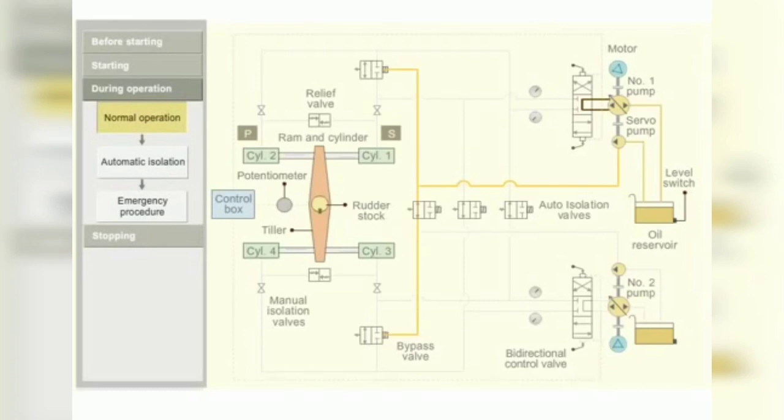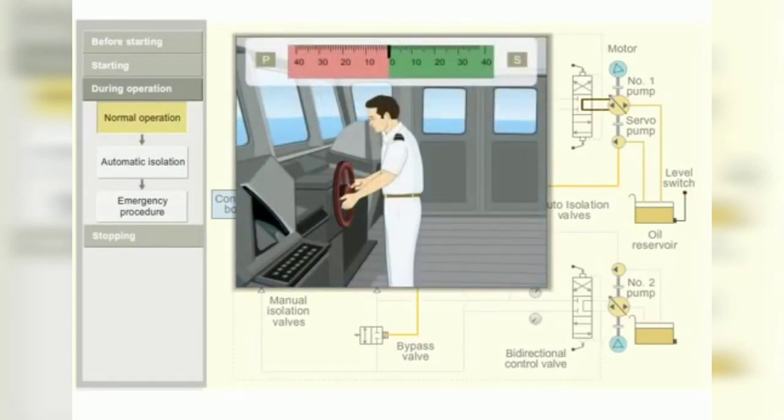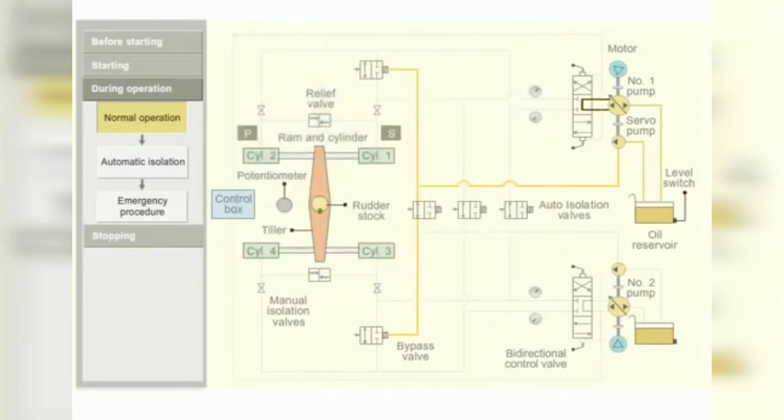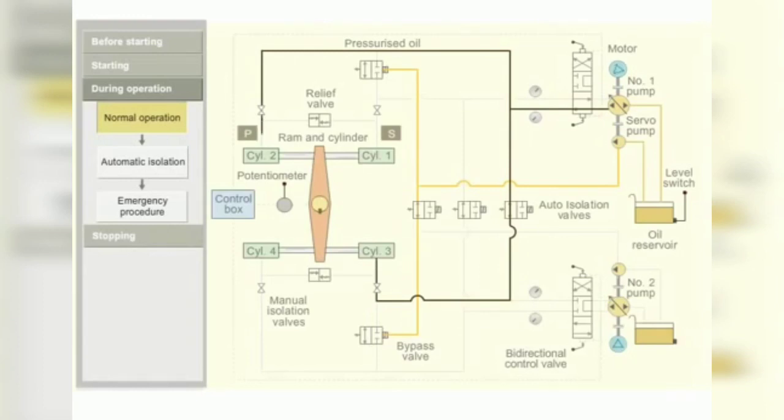When port order is given from the bridge, the control box sends a signal to the bidirectional control valve that moves to the forward side. Pressurized oil is pumped into ram 2 and 3. The pressurized oil moves the ram. The tiller in turn moves the rudder stock from the midship to port position.